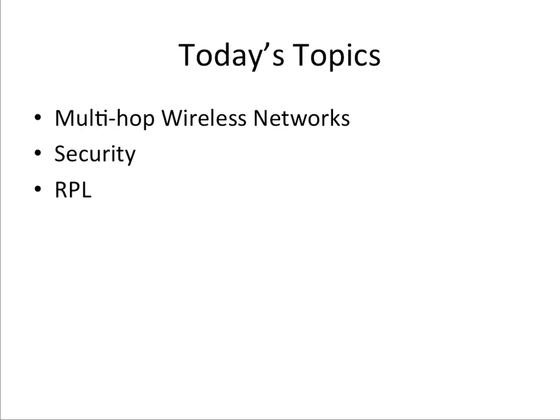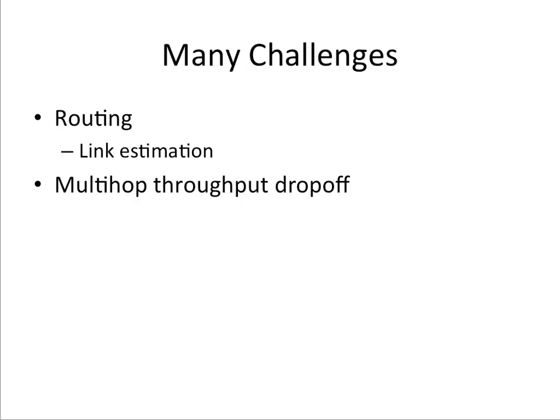Today we're going to wrap up our discussion of multi-hop wireless networks — we started this last time. Then we'll move on to security and talk about a protocol called Ripple, which our TA will present. In multi-hop wireless networks there are many challenges; one is link estimation, which we'll cover in the next few minutes.